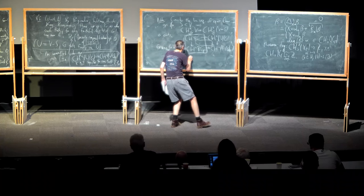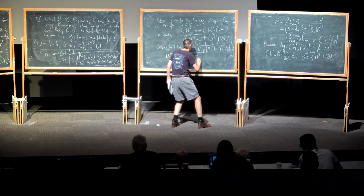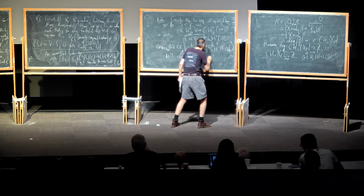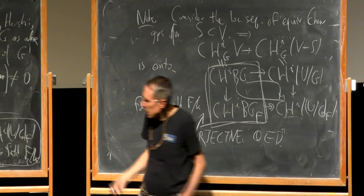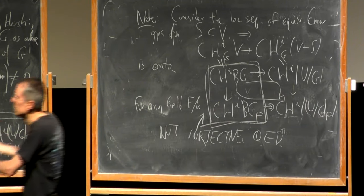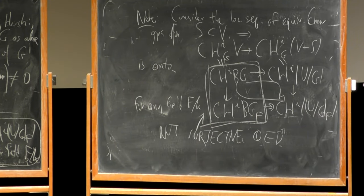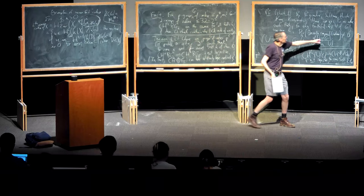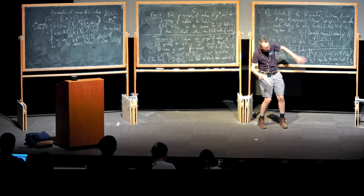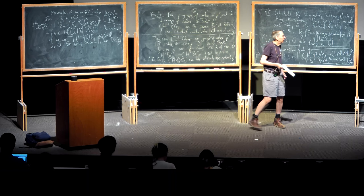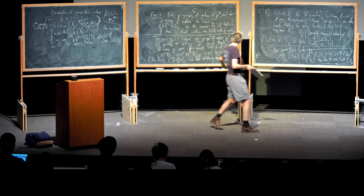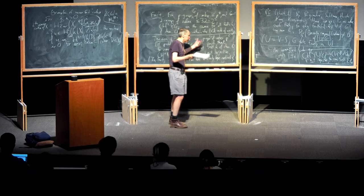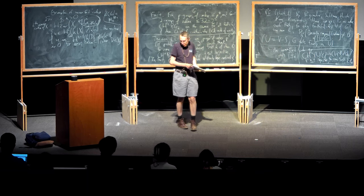It's a bit puzzling because if you ask yourself what are these fields for which this is happening, the proof tells you they are function fields of some varieties that come up — maybe function fields of this variety or of sub-varieties. You look at the proof but you don't get a very explicit description of what these fields are. Anyway, that's what I have. Thanks.